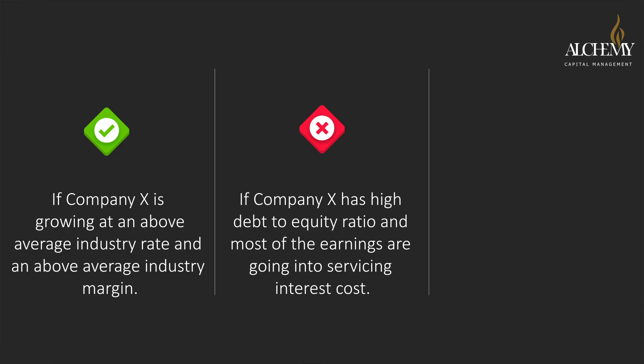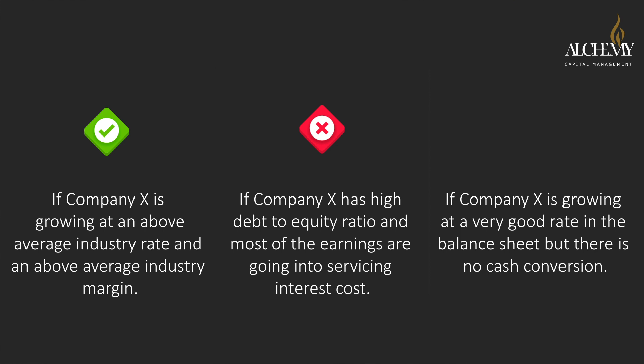But what happens when a positive and a negative attribute come together? For example, if a company is growing at a very good rate on the balance sheet but there is no cash conversion happening, then that becomes a negative node and we give negative marking. At the end of the day, each of these companies is presented with these 250 questions and they are ranked and marked, which is where the Ascent proprietary algorithm comes in.